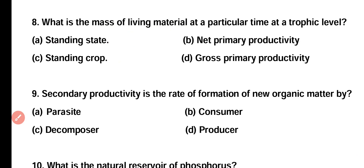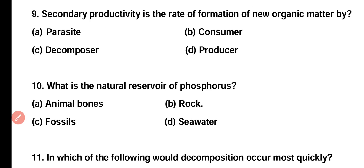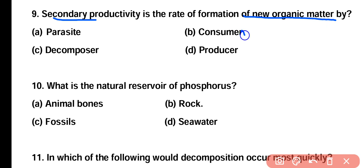Question number nine: secondary productivity is the rate of formation of new organic matter by parasite, consumer, decomposer, or producer? Correct answer is option B — consumer. The new organic matter produced by consumers is called secondary productivity.